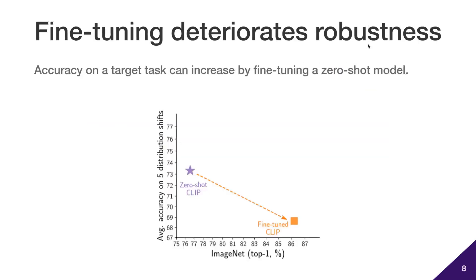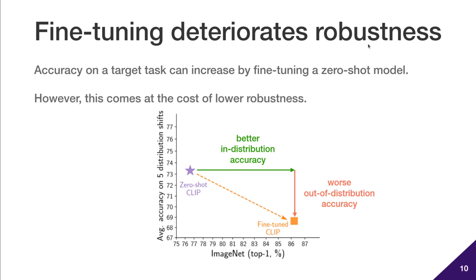Zero-shot models are hardly perfect, and you typically can gain a lot of accuracy if you fine-tune on data from a target task. However, fine-tuning also deteriorates the robustness to distribution shift that makes these models so attractive.